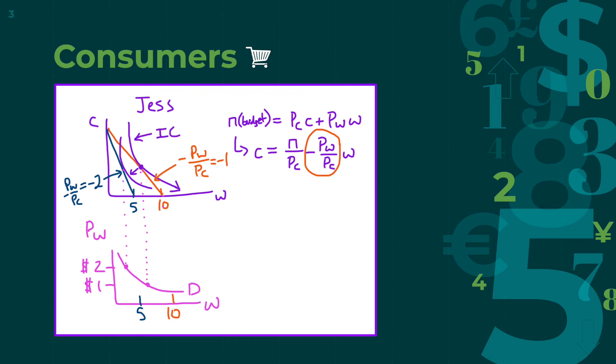Now, we can draw a demand curve for wheat, again, with the amount of wheat on the x-axis and the price of wheat on the y-axis. Let's say the price of wheat increases to $2, which means Jess can only afford a maximum of 5 units of wheat, but she can still afford 10 units of corn. So her budget constraint line becomes more steep, and her indifference curve also shifts to the left, at a point tangent to the budget constraint line.